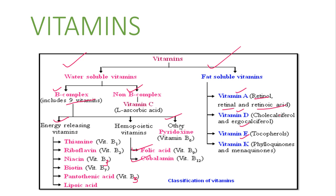So these are the classifications of vitamins. Vitamins are divided into water-soluble and fat-soluble. In fat-soluble we have vitamins A, D, E, and K along with their chemical names. In water-soluble we have vitamin B and C, where B is further divided into B-complex with nine vitamins, all with their respective chemical names.